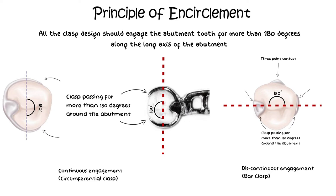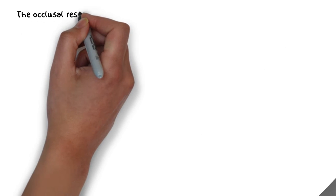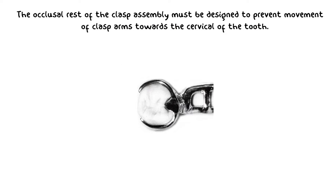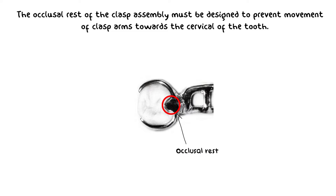The types of clasp designs will be discussed in future videos, but this principle of encirclement is fundamental for any type of clasp design and is very important for prosthodontists and dental students to understand. Moving on, the next principle states that the occlusal rest of the clasp assembly must be designed to prevent movement of the clasp arm towards the cervical of the tooth. This is only possible if the rest seat is properly prepared and the rest is made rigid to resist vertical movement of the clasp assembly.